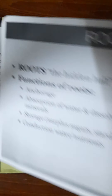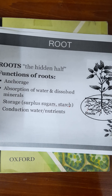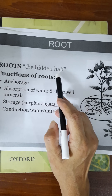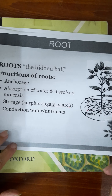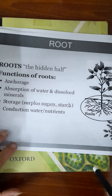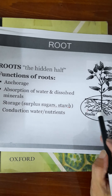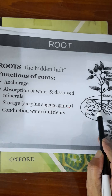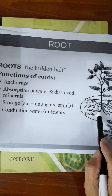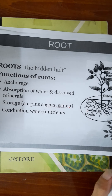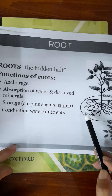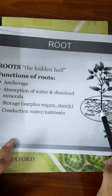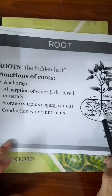Now comes the roots. Roots are the hidden half — half of the plant that cannot be seen because they are inside the soil. They help in anchorage, meaning they fix the plant in the soil. Without roots, the stem would not be anchored. Roots also help in the absorption of water and dissolved mineral salts, because at the tip of the roots we have root hairs that absorb water and mineral salts.